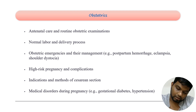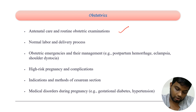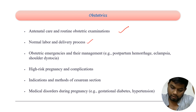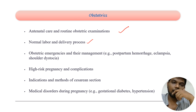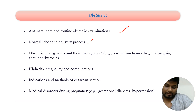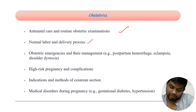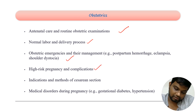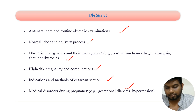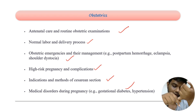In obstetrics, antenatal care and routine obstetrics examination are very important. You also need to know normal labor and delivery — all four stages of labor: stage 1, stage 2, stage 3, and stage 4 — including duration, influencing factors, active phase arrest, prolonged stage 1 and stage 2 labor, and the cardinal movements of labor. Apart from that, obstetric emergencies like PPH, eclampsia, and shoulder dystocia requiring immediate C-section, as well as high-risk pregnancy complications, indications of C-section, and medical disorders during pregnancy.